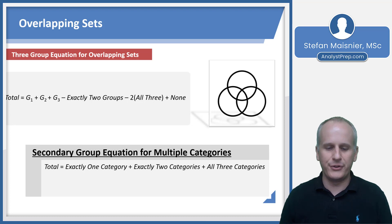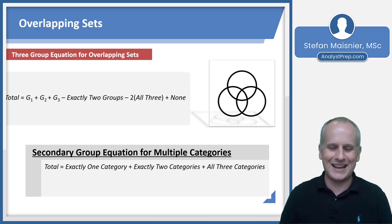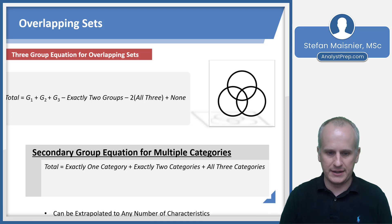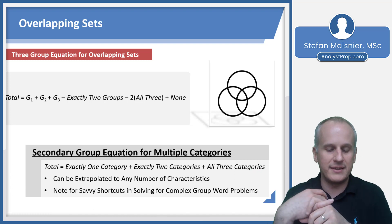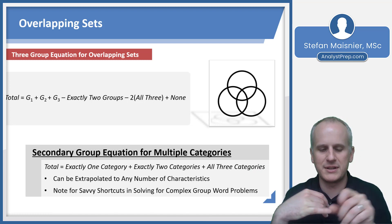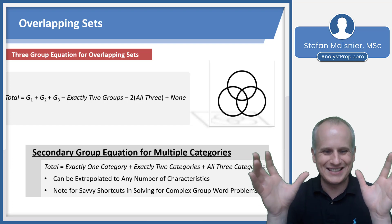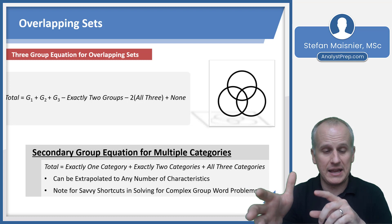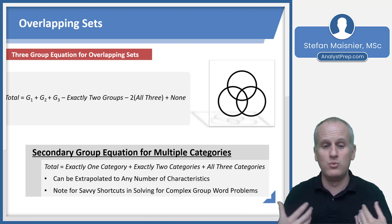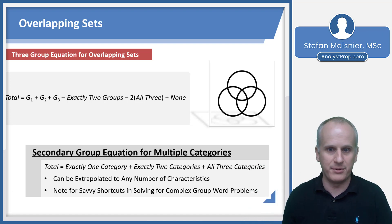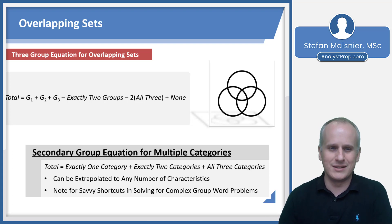The secondary equation is: total equals those in exactly one category, plus exactly two categories, plus all three categories, plus those in none of the categories. This can be extrapolated to any number of characteristics. You can't be in exactly one category and exactly two categories and exactly three categories at the same time — they're mutually exclusive — so you can just sum them simply. That's really quite helpful when you start getting into the weeds with complex three-group equations.